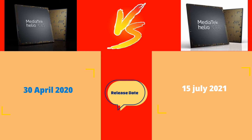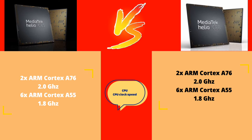The latest processor is the Mediatek Helio G-88. We will talk about the same CPU and CPU clock speed. Both have high performance and low performance cores. The high performance core is ARM Cortex-A76 at 2.0 GHz, and the low performance core is ARM Cortex-A55 at 1.8 GHz.